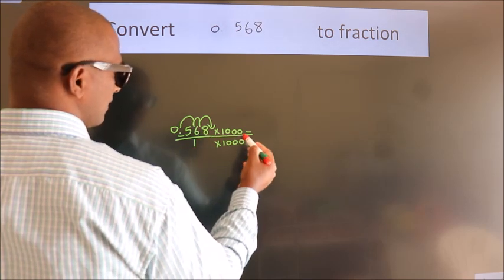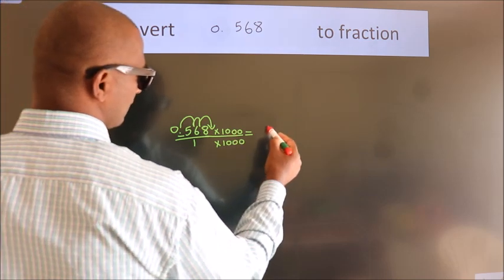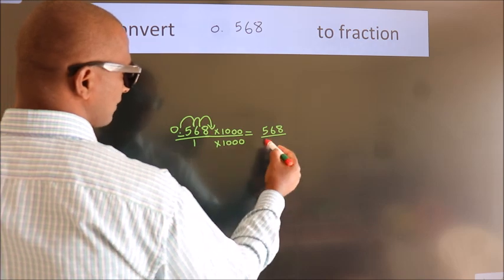Next, 0.568 into 1000 is 568. 1 into 1000 is 1000.